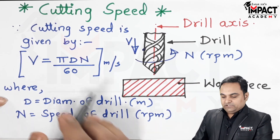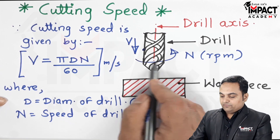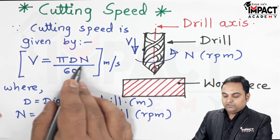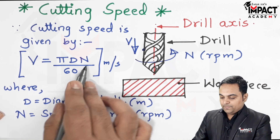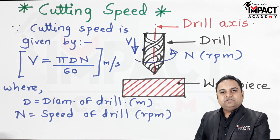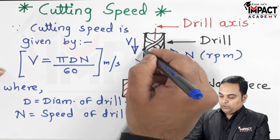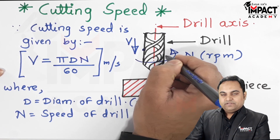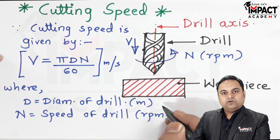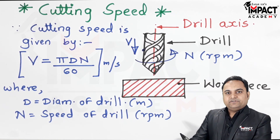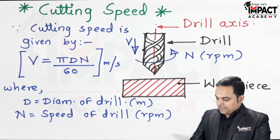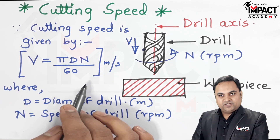So capital D is the diameter of the drill in meters, and capital N is the speed of the drill in rpm. We get the cutting speed as the linear velocity of a point on the drill — the amount by which it is moving into the workpiece — and that linear velocity is called the cutting speed, given by V = πDN/60.